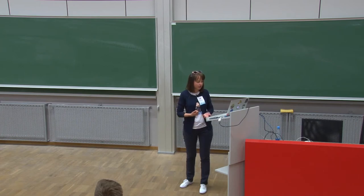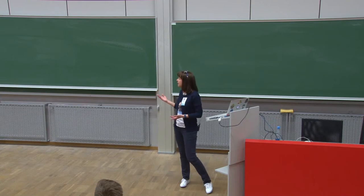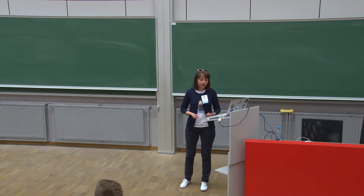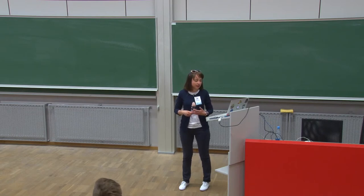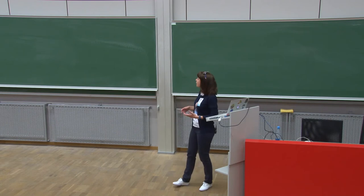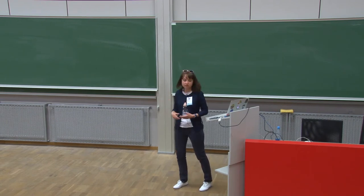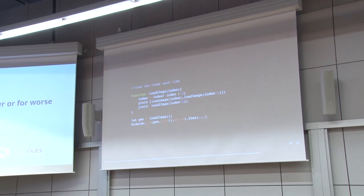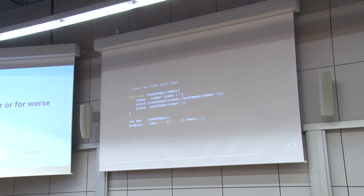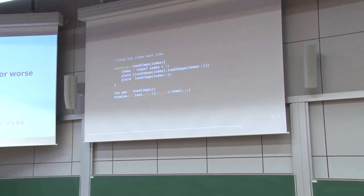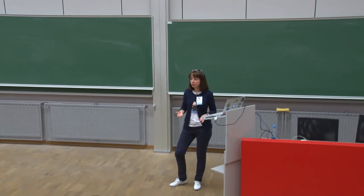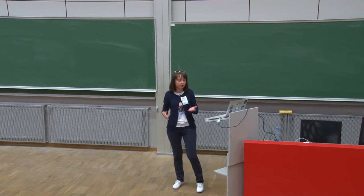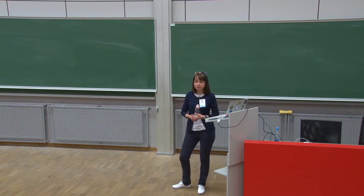One thing I tried to do with it: say you want to load two images at once. What I would do is yield an array of promises — where load image consumes the index of the image — and then delegate execution back to the generator function itself with another index. When you create the generator object, use Promise.all and do all that. You can call it again later to load two images at once, or two rows of data from a table at once.